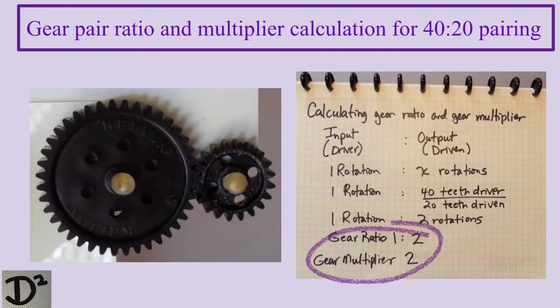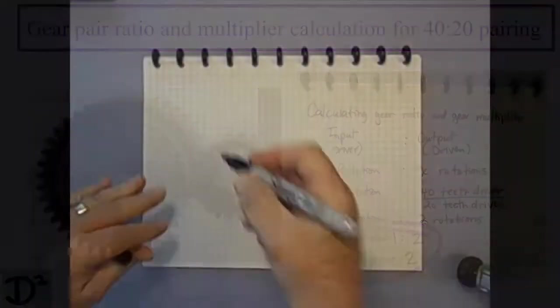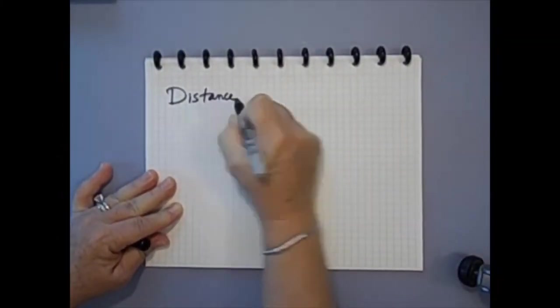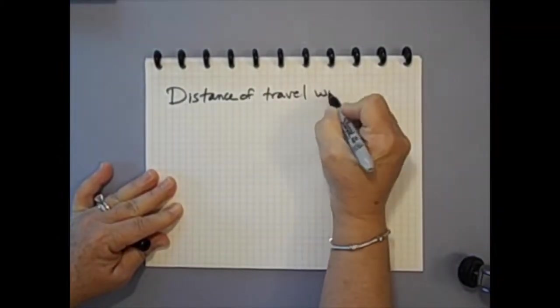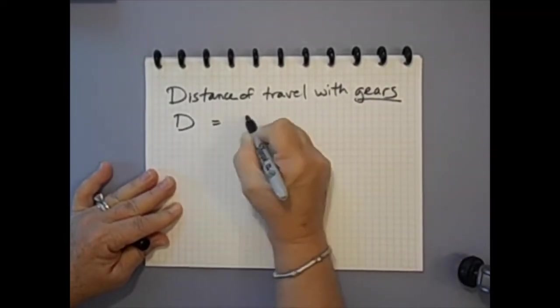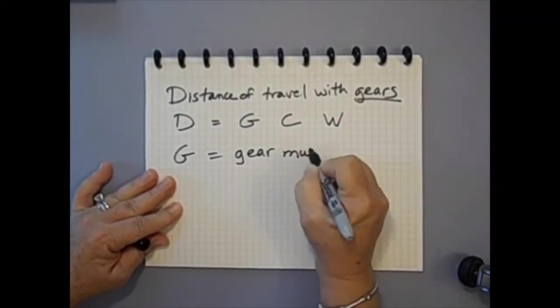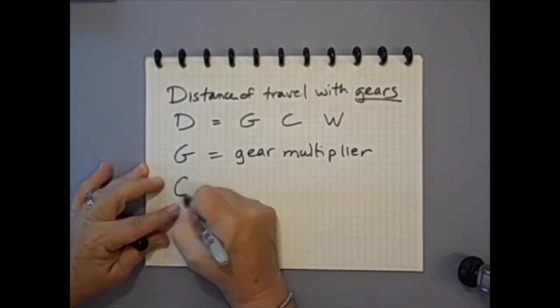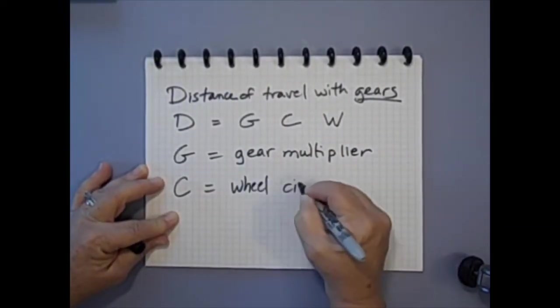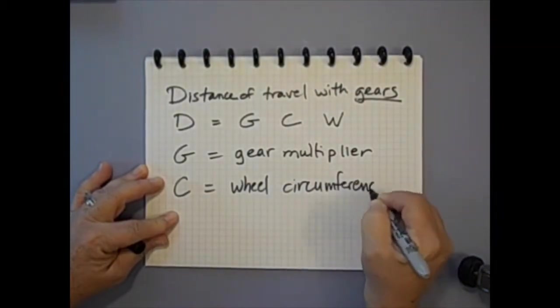In this spring theory lesson, the mousetrap car on introduction to gears, we have shown you how to calculate a simple gear ratio and gear multiplier by dividing the number of teeth on the driver gear by the number of teeth on the driven gear. You learned how this factor is used to calculate a distance prediction using the formula distance equals the gear multiplier G times wheel circumference C times the number of string wraps W or D equals GCW.